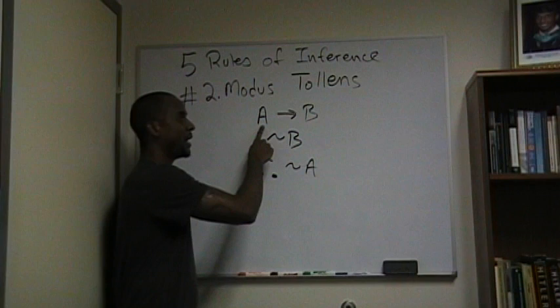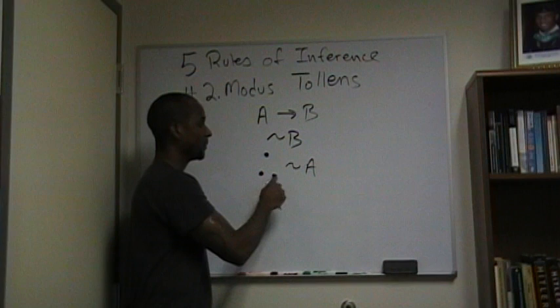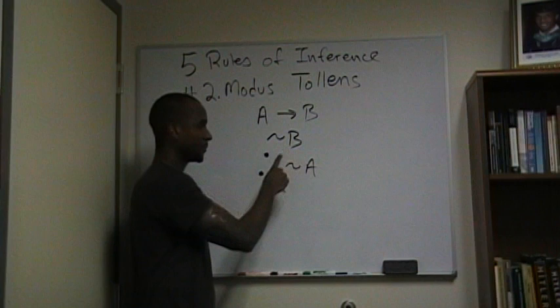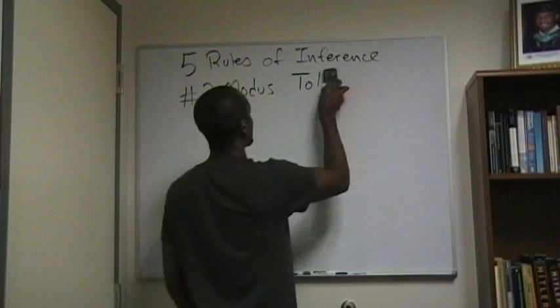For example: if I eat too much, my stomach will hurt. My stomach doesn't hurt. Therefore, I have not eaten too much. Number two is modus ponens.